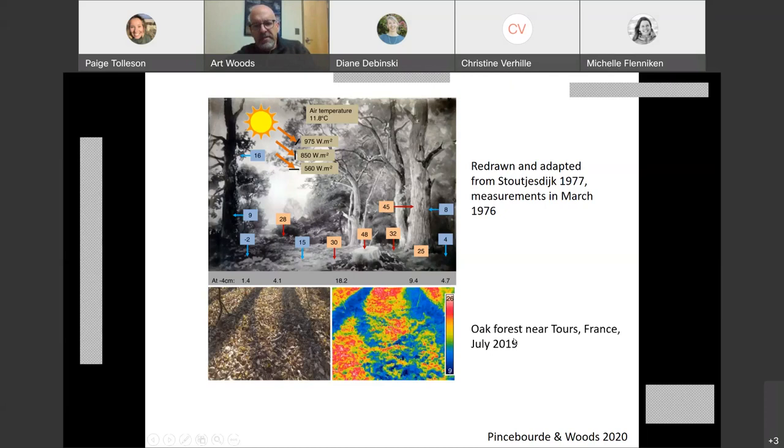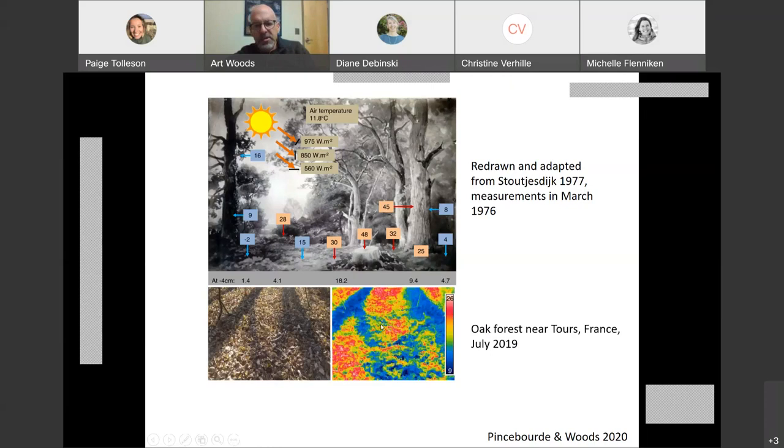Here's a companion set of pictures that Sylvain took in an oak forest near Tours where he works using a thermal imaging camera. This is the visual frame. You can see the leaf litter underneath the oaks. There's the shade of the oak trunks and then these illuminated leaves. Just kind of shockingly high amounts of thermal variation. In the shade, it's like down to nine or 10 degrees. And in the sunny it's excessive to 24 degrees Celsius.